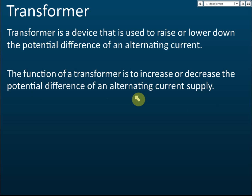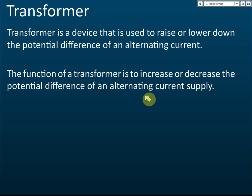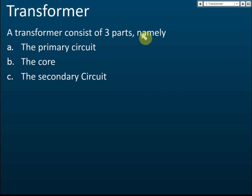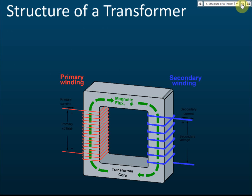A transformer can only change the potential difference of alternating current — it cannot change the potential difference of direct current. It only works for alternating currents and does not work for direct currents. A transformer consists of three parts: the primary circuit, the core, and the secondary circuit.